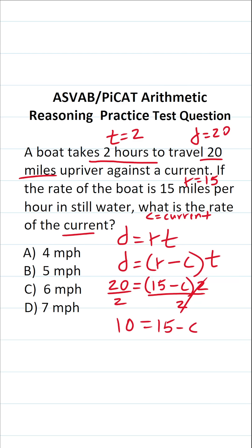We want to solve for C, so the next thing I'm going to do is subtract 15 from both sides. This crosses out, leaving us with negative C over here. 10 minus 15 is going to be negative 5.